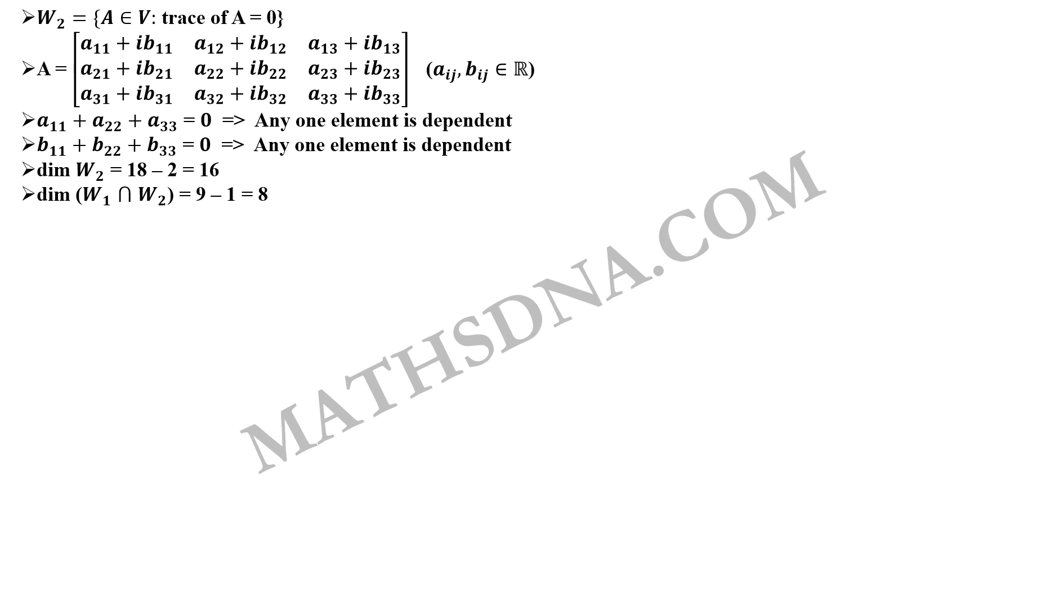Now, dimension of W1 intersection W2 will be 8. You can easily find this and as I said we can also demonstrate it by taking A11 equals to minus A22 minus A33 then W1 intersection W2 will have dimension 8. Similarly, we can do for B11, B22 and B33.